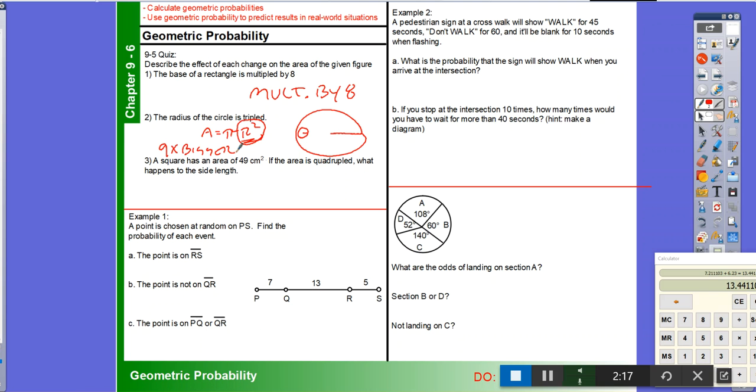Number 3. A square has an area of 49 square centimeters. The area is quadrupled. What happens to the side lengths? Well, if the area is quadrupled, we have to work backwards. We know that the area is the scale factor squared times bigger. So what's the square root of quadrupled? The square root of 4 is 2. So the side lengths will be 2 times larger.